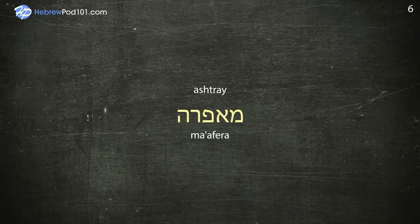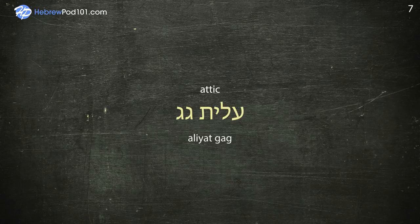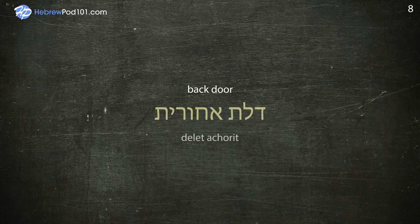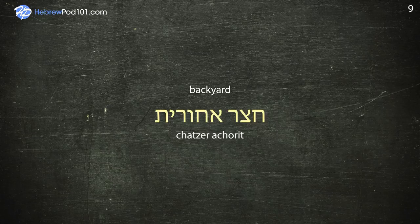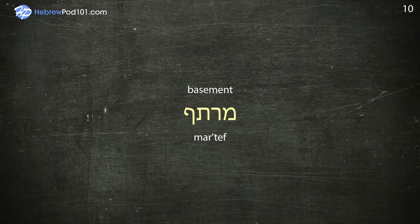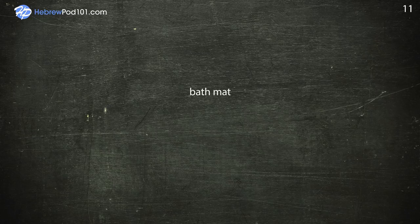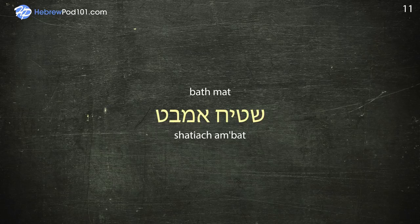Attic — Aliyat Gag. Back Door — Dillet Achorit. Bath mat — Shatiyach Ambat. Bath towel.